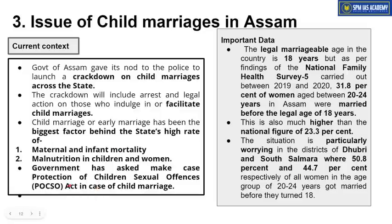Isliye Assam government ne Assam Police ko nirdesh diye hain ki aise cases mein POCSO Act ka istemal karein. Minimum marriageable age hamare desh mein abhi bhi 18 saal hai for girls, jisko haal mein government badhaakar 21 saal karne ka plan kar rahi hai — after the Jaya Jaitley Committee recommendations. Is context mein ek bill bhi parliament mein rakha gaya hai, par abhi woh pass nahi hua. Toh abhi ke liye minimum marriageable age 18 years hai, jisko government 21 tak badhana chahti hai.